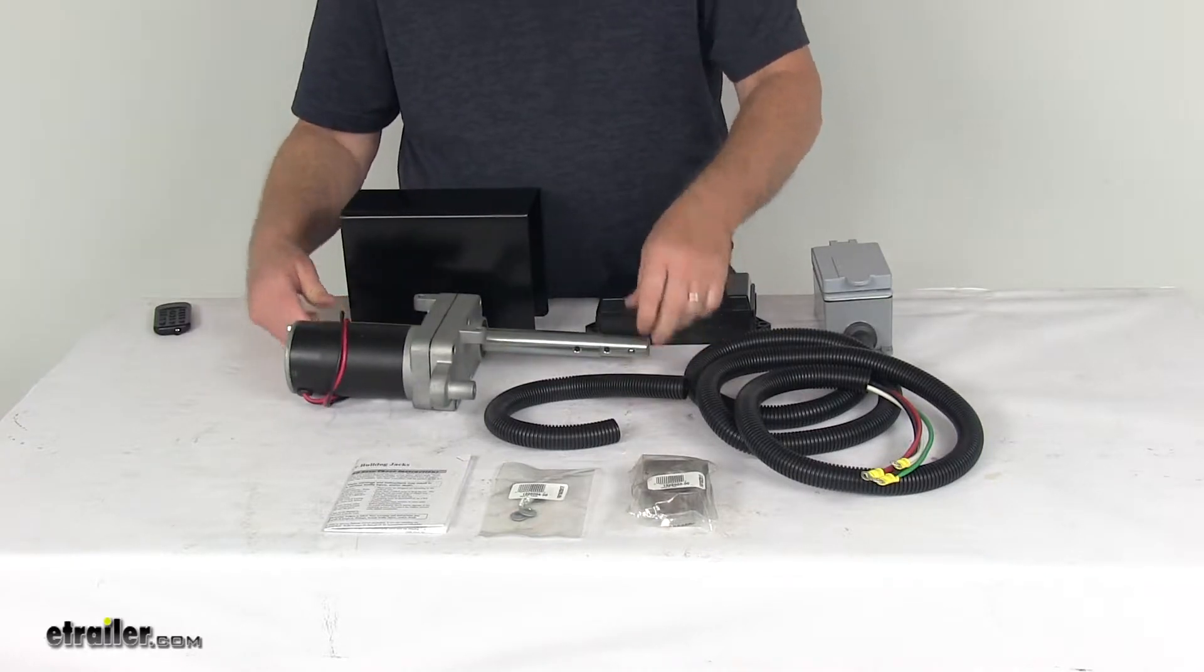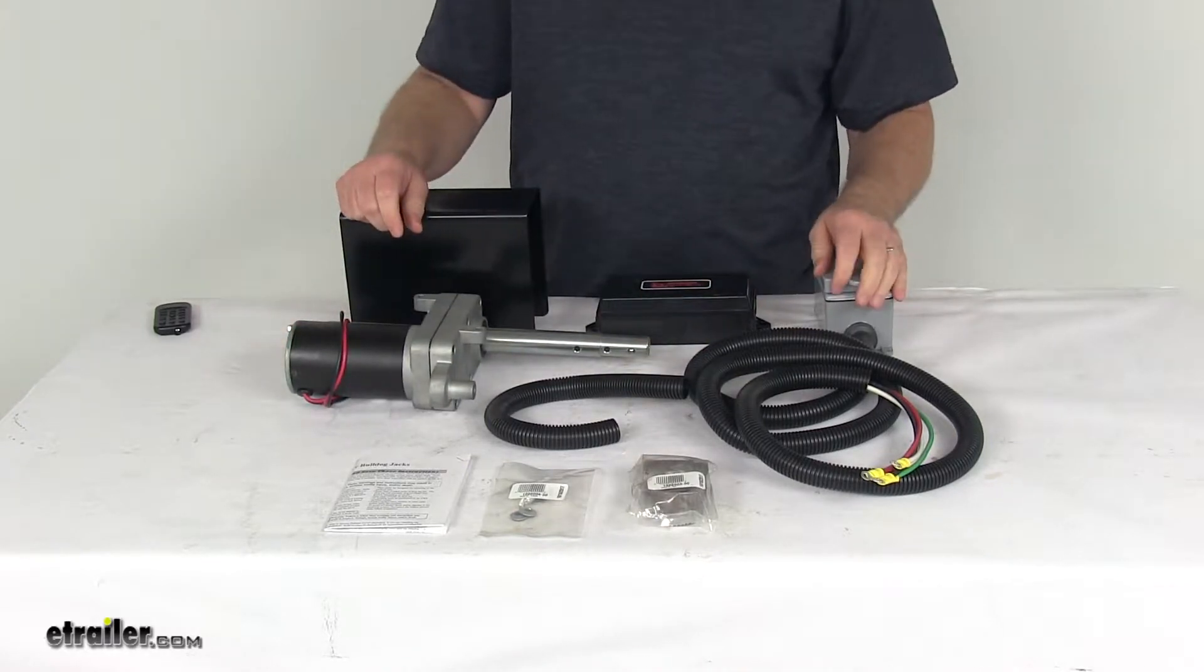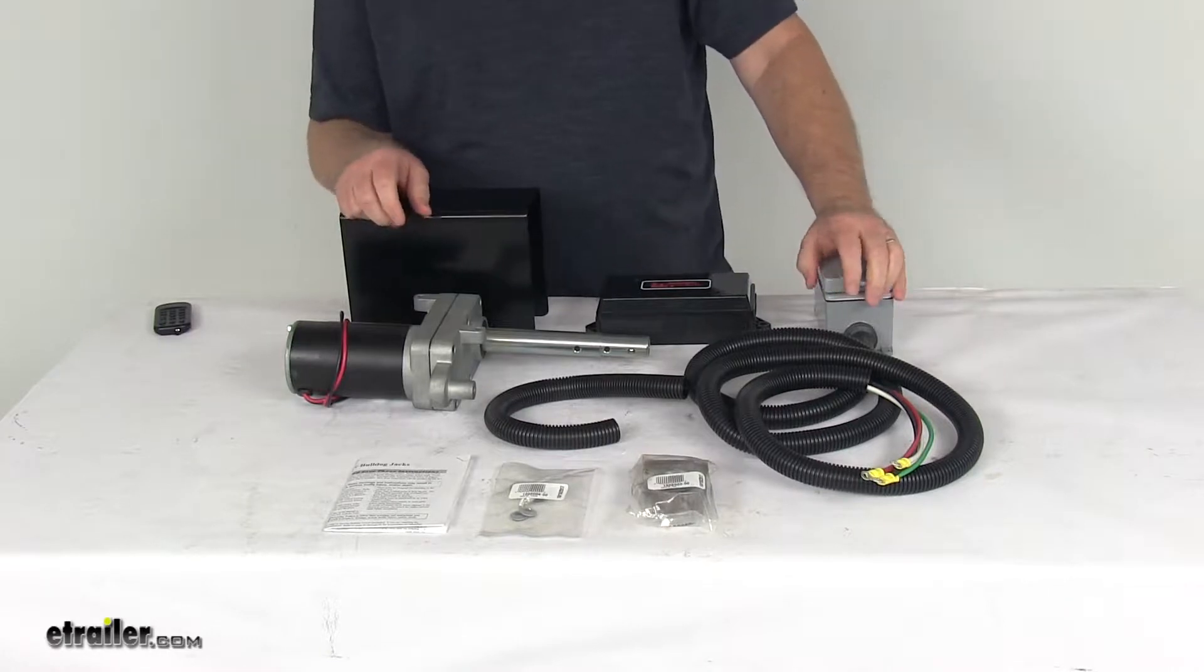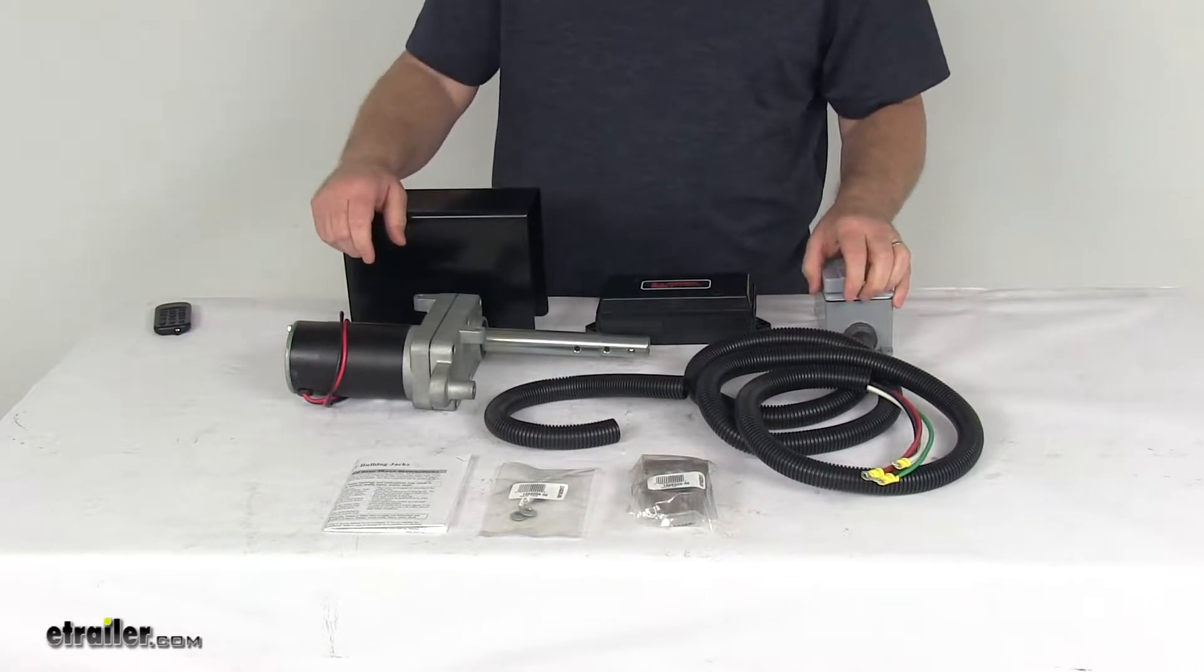It's designed to fit the Bulldog 2-Speed Planetary Gear Jacks with the 12,000 pound static capacity, and it works great for horse, livestock, and heavy duty trailers.